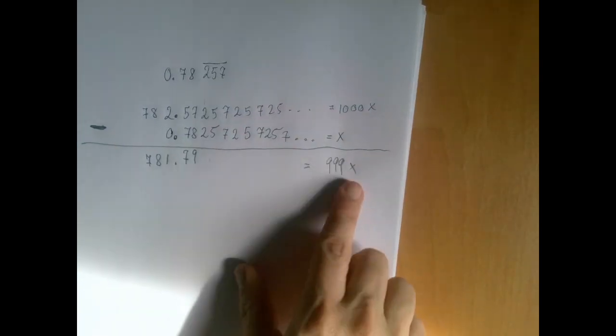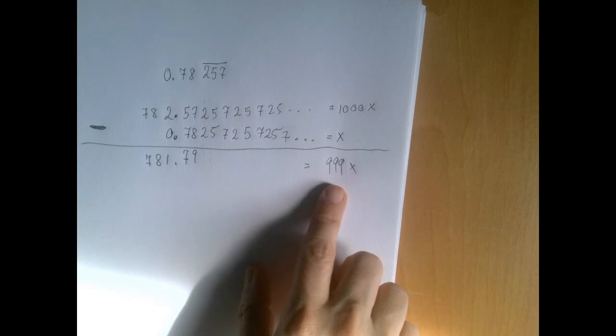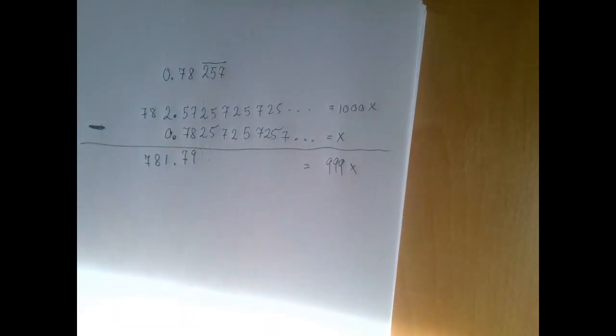We have to solve for x. If we divide both sides by 999 right now, we will get a fraction, but the numerator is not an integer. There is an easy fix for that.